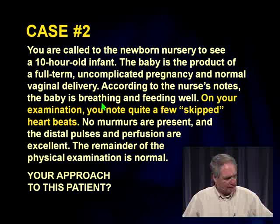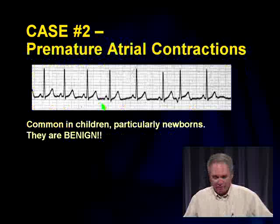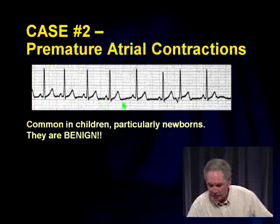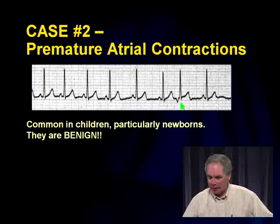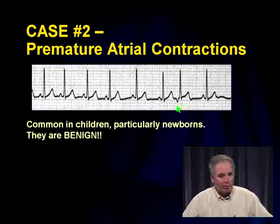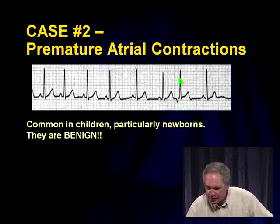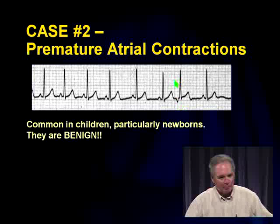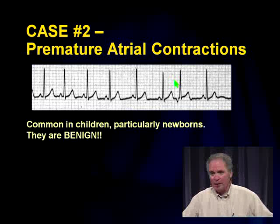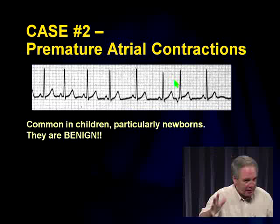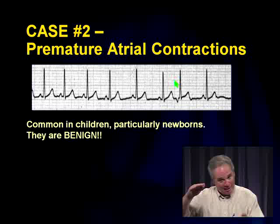A call to the nursery about a 10-hour-old infant with irregular rhythm and skipped heartbeats. The EKG shows P-Q-R-S-T, P-Q-R-S-T, and then an early beat with a narrow QRS complex — a premature atrial contraction. Sometimes you won't even see the P wave, just the early QRS. This is common in infancy and the newborn, and it is benign. No workup needed — no electrolytes, no cardiology consult, no echo — just reassure.